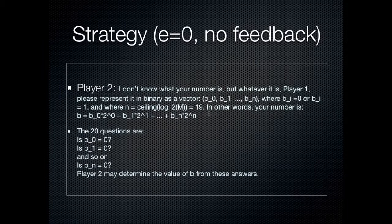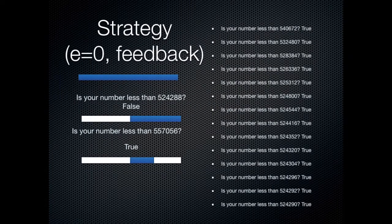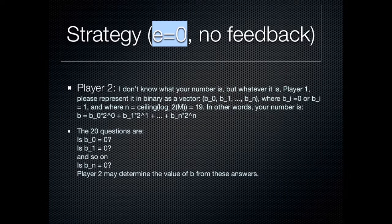The number of questions is the same as in the feedback case. So having the ability to adapt your questions to answers does not shorten the number of questions if there are no lies allowed — if Player 1 is not allowed to lie at all. Player 1 has secretly selected a number from 1 to M, and Player 2 asks yes or no questions to determine that number, with Player 1 allowed to lie some fixed number of times. We want to find the smallest number of questions Player 2 can ask.